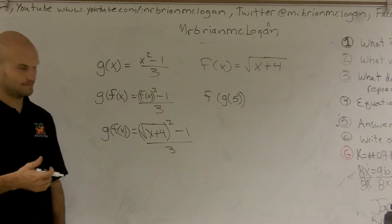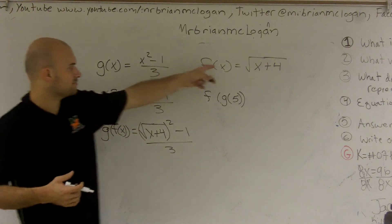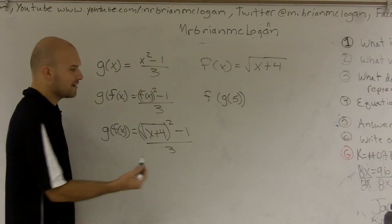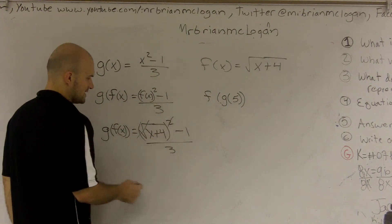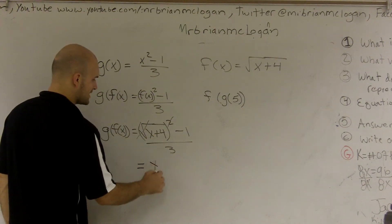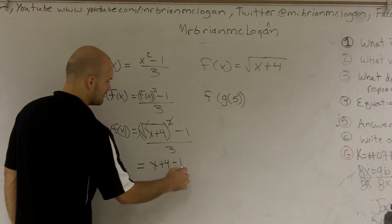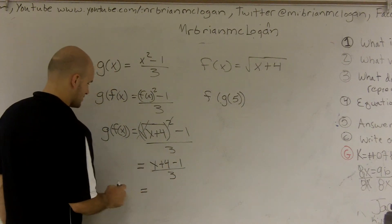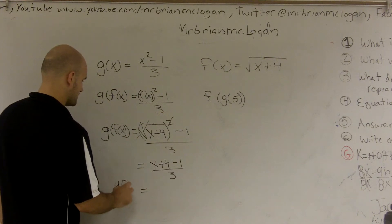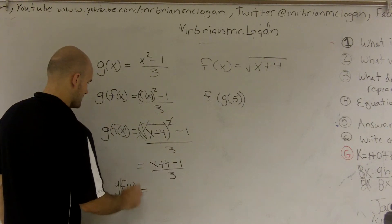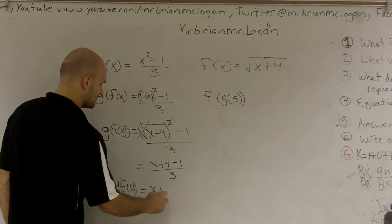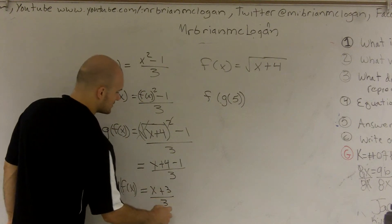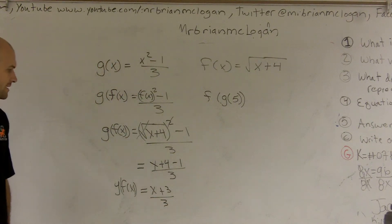All right, so all I did was plug in what f of x equals. Well, now I can simplify. Those cancel out. So I'm left with x plus 4 minus 1 over 3. 4 minus 1 is 3. So I can say g of f of x is equal to x plus 3 divided by 3. And that's my final answer.